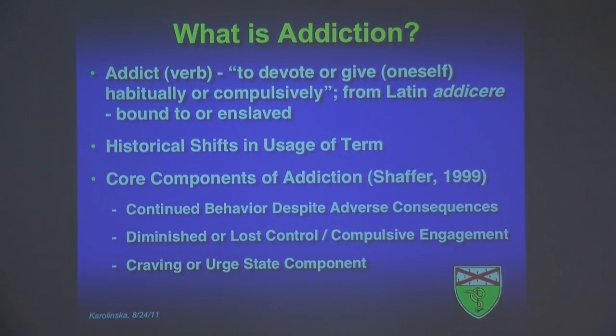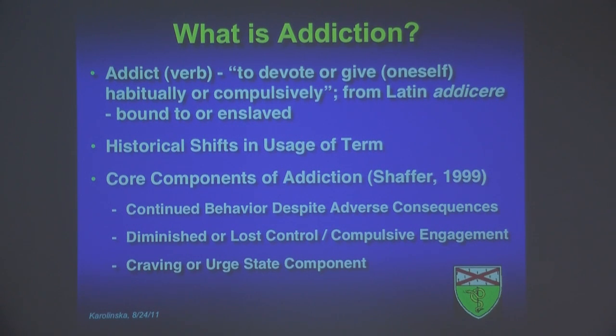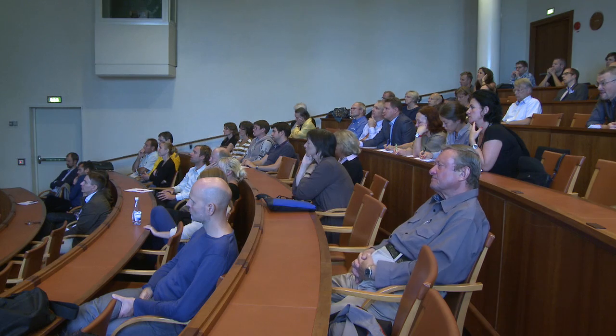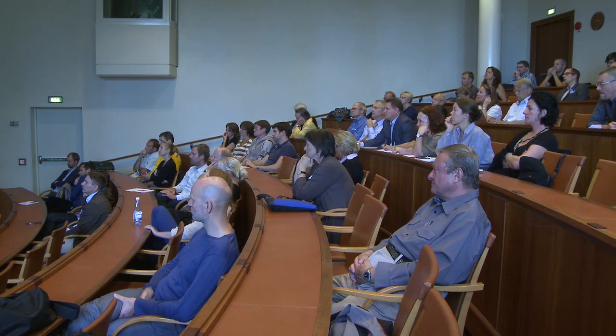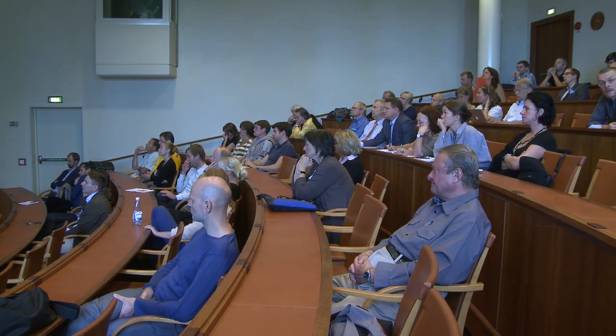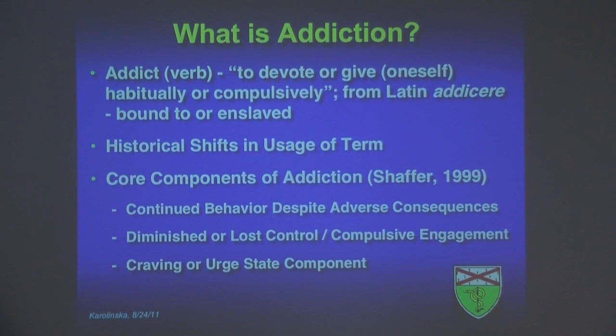There was by accounts uniform agreement that addiction meant compulsive drug use. However, over the past 10 to 15 years, that notion has been challenged somewhat, and people have been thinking about whether addiction might apply to a broader range of behaviors outside of substance use. In the 1990s, Howard Schaefer and others proposed several core elements of addiction, such as continued behavior despite adverse consequences, diminished or lost control, compulsive engagement in behavior, and a craving or appetitive urge state immediately prior to engagement. If we think of these as the core elements, perhaps addiction could encompass non-substance use behaviors.